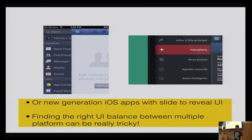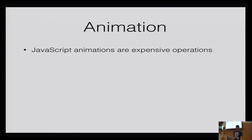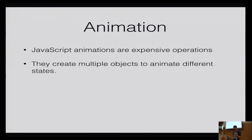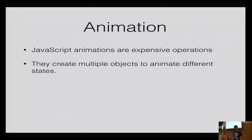For animations, you can find many JavaScript libraries that provide good animations. But when building cross-platform or HTML5 applications, you should restrict yourself from using JavaScript-based animation libraries and instead use CSS animations to improve performance. The reason is that every time you use JavaScript animation, you create more objects. If you're not managing those objects and memory properly, after 15 to 20 minutes of usage the application will slow down drastically.